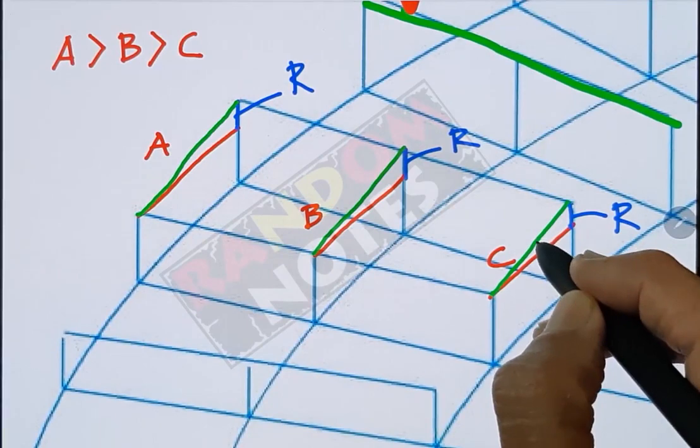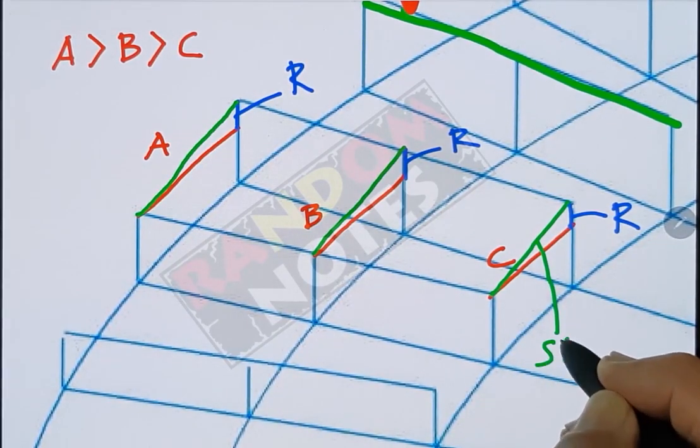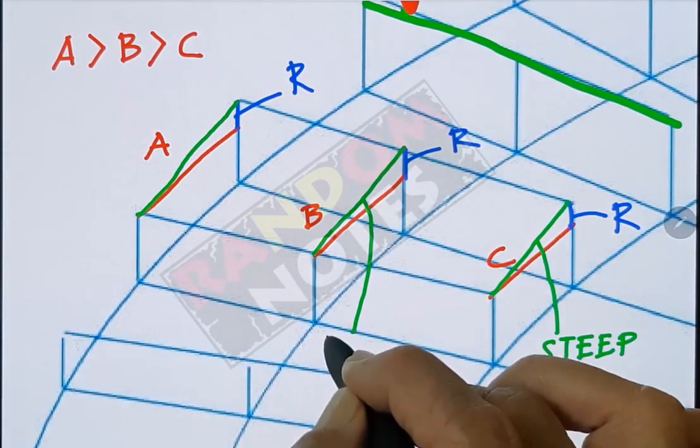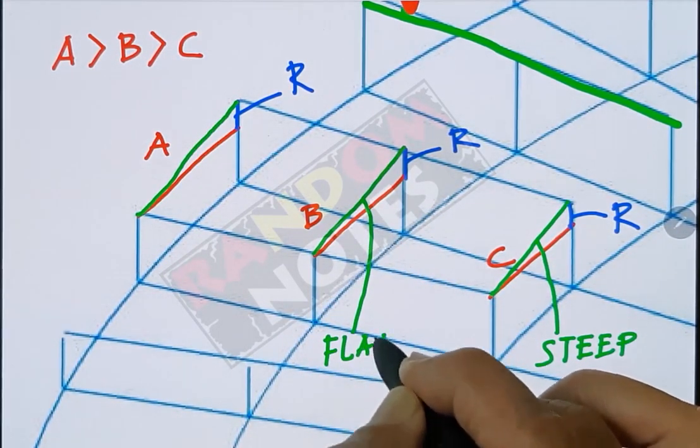For the shorter distance C, you will get a steeper slope. For B, you will get a flatter slope. And for A, you will get the flattest slope.